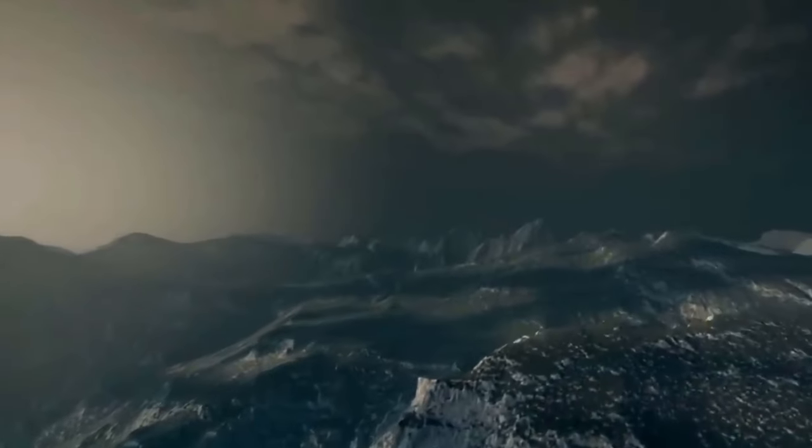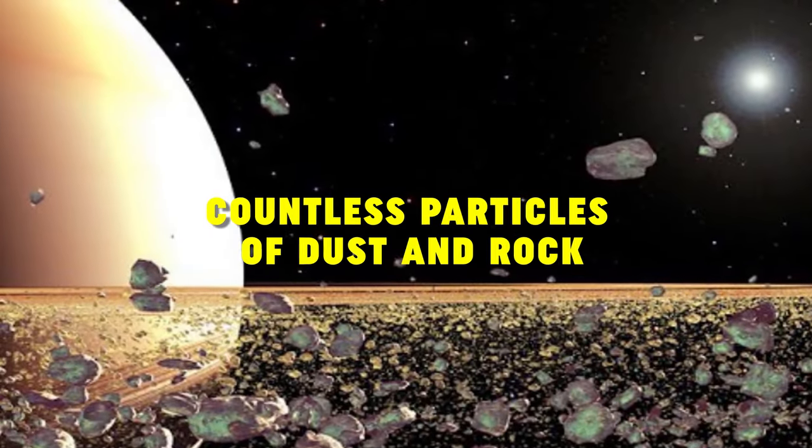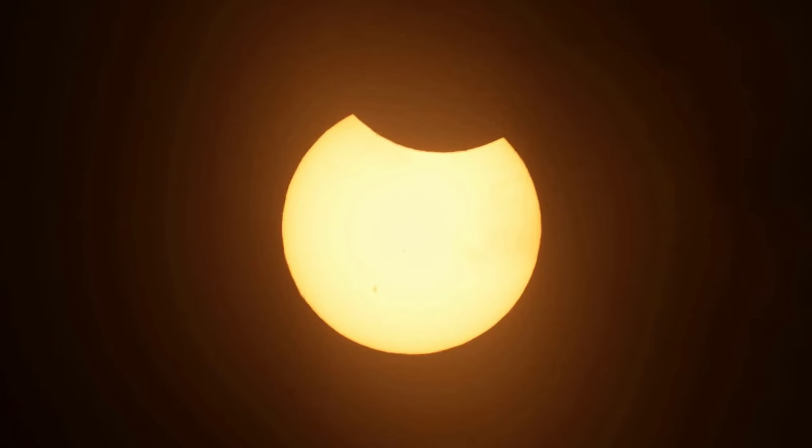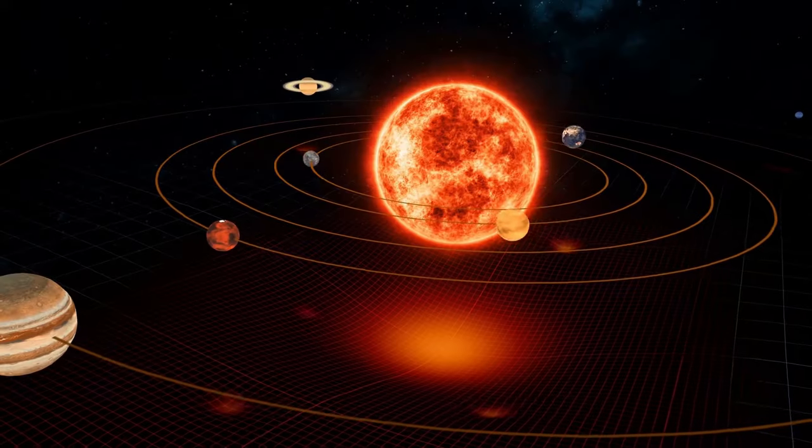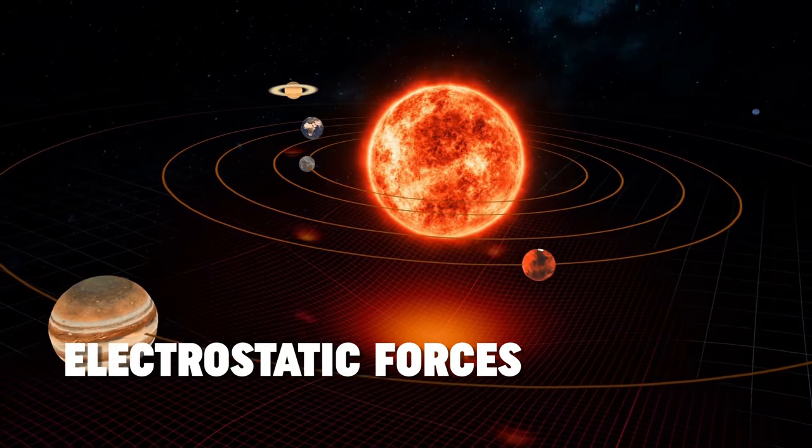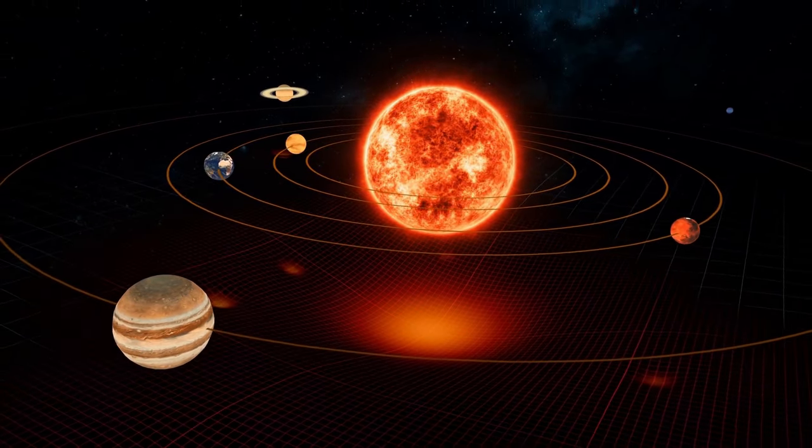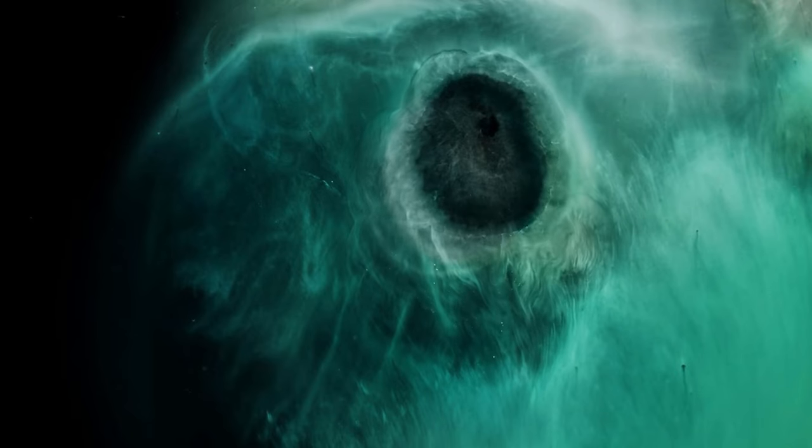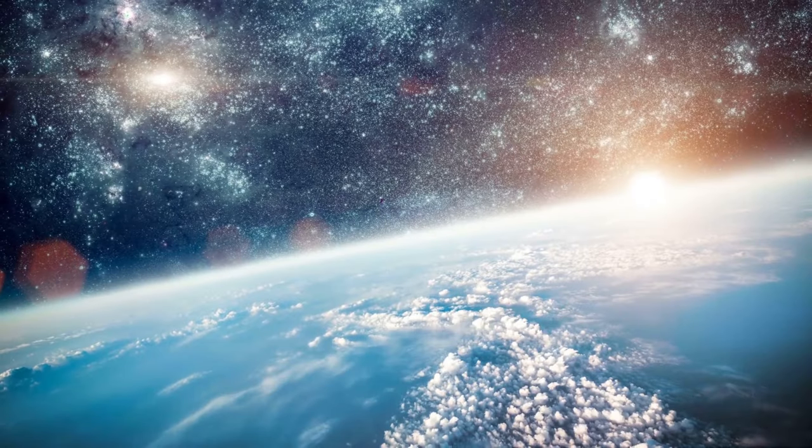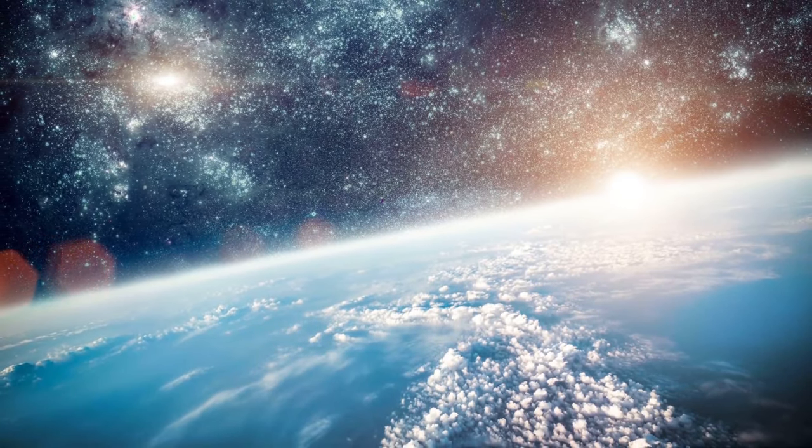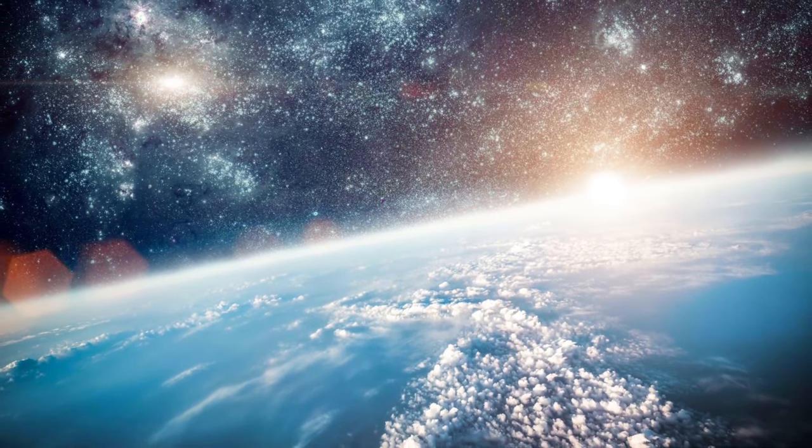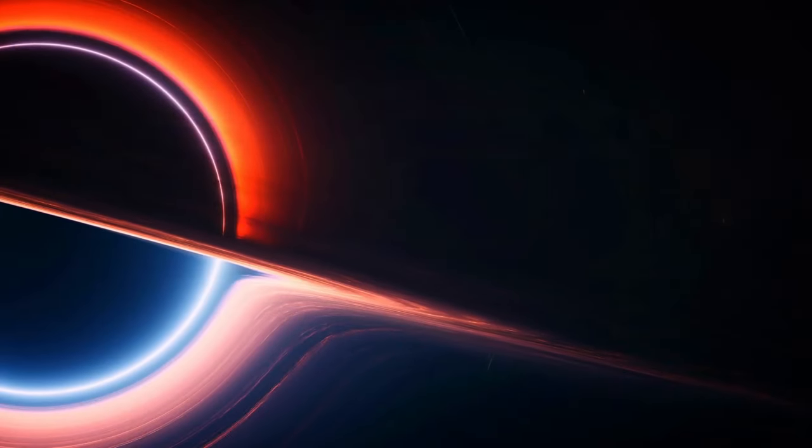In this celestial nursery, countless particles of dust and rock, remnants of the solar system's nascent days, started to coalesce. Influenced by gravity and electrostatic forces, these particles began to clump together, forming larger and larger aggregates. Over time, these growing clumps evolved into substantial bodies known as planetesimals, the building blocks of planets.